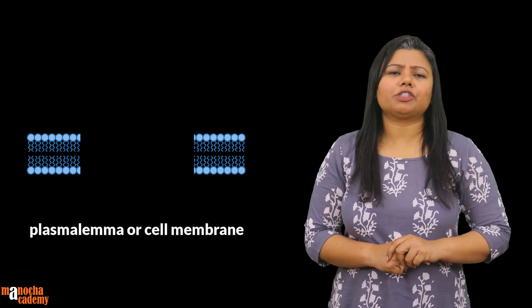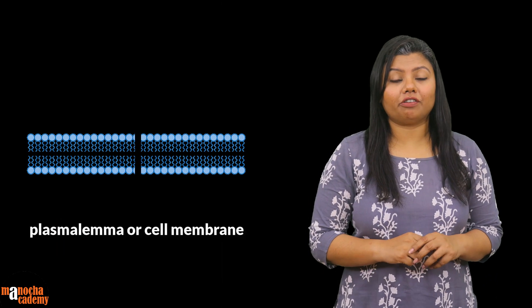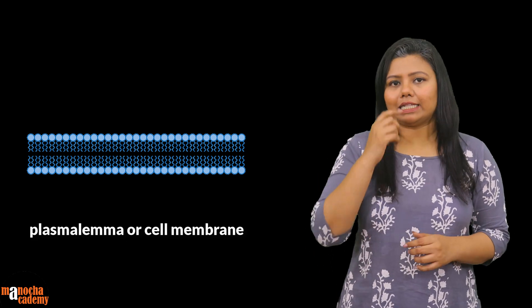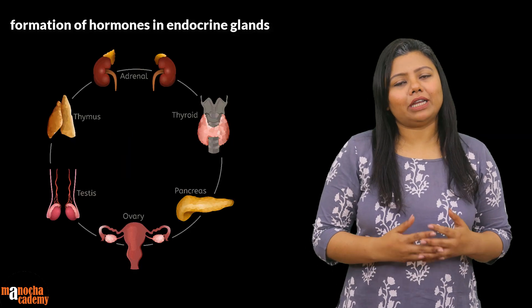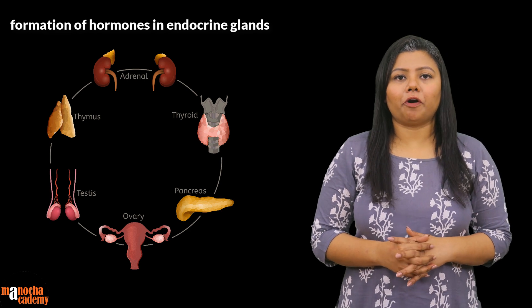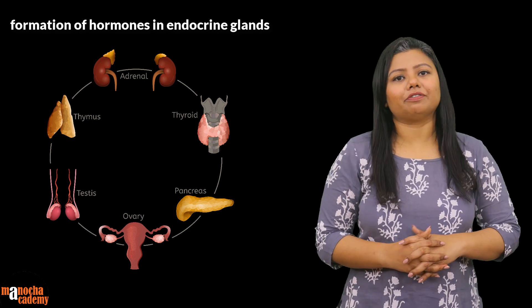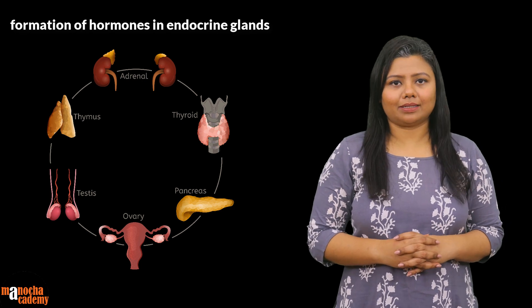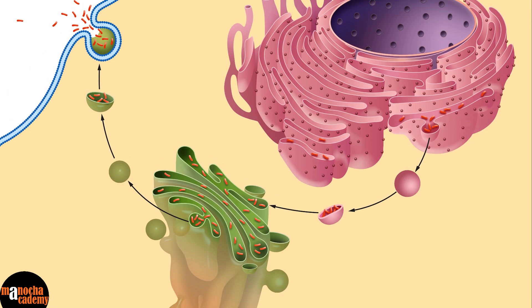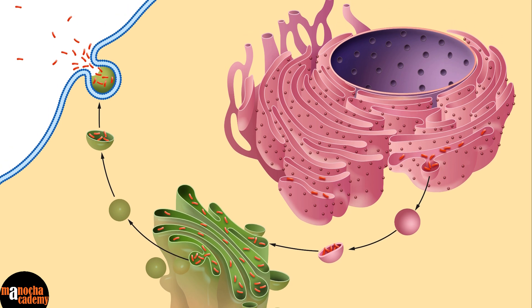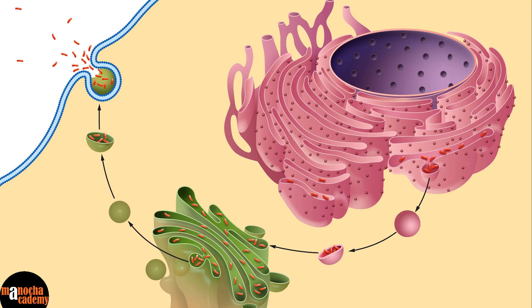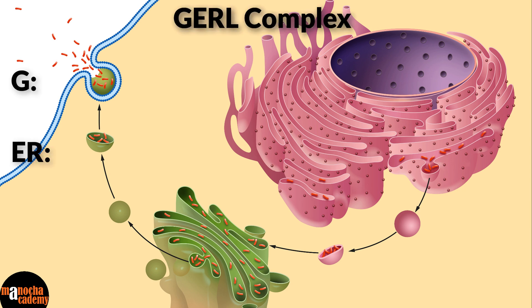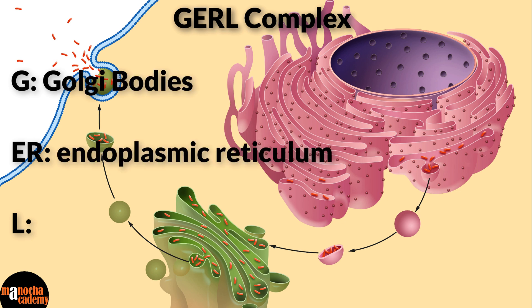The Golgi bodies are also responsible for the formation of the plasma lemma or cell membrane in plant cells after cell division, and are responsible for the formation of hormones produced in different endocrine glands. The endoplasmic reticulum, Golgi bodies, and lysosomes together form a system known as the GERL complex — where G stands for Golgi bodies, ER stands for endoplasmic reticulum, and L stands for lysosomes.